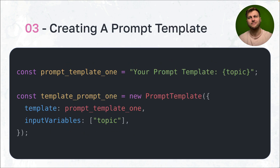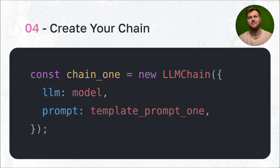Once that's set, we create our first template. A template is something you can reuse many times with a different variable each time. We create PromptTemplate one, and within the brackets the topic is a variable we can provide — it could be cats, pizzas, whatever you want. We create the prompt template using the new PromptTemplate constructor, passing our template string and our input variables, which define what to replace when calling this template.